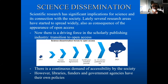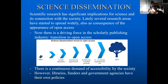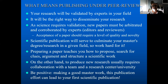Then we go over the last part of the talk, which dips into science dissemination. Scientific research has significant implications for science and its connection with society. Several research areas have started to spread widely, thanks to open access. There is now a driving force in the scholarly publishing industry — this transition to open access — because there is a continuous demand for accessibility by society. However, libraries, funders, and government agencies have their own policies. So let's see how science dissemination works, and particularly what it means to publish under peer review.